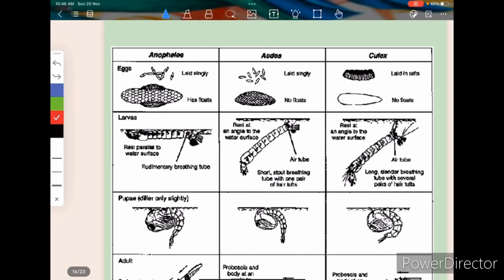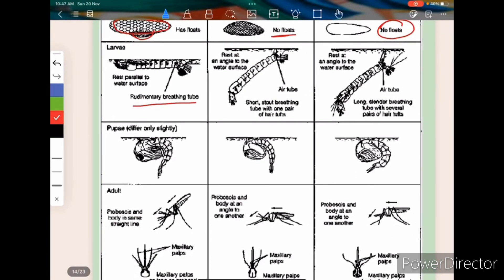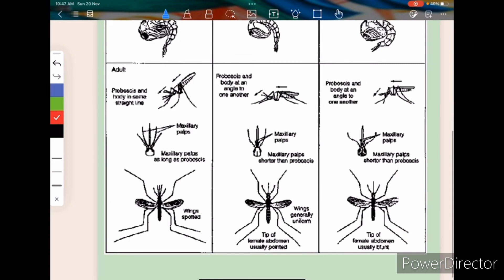Now comparison: see the eggs of Anopheles, a single egg with the lateral floats. See the lateral floats here. The eggs are laid singly, no floats, laid in rafts, no floats. And the larva here, respiratory breathing tube is present, not the siphon, but here the siphon is present. Air tube present, air tube present. They are very similar.